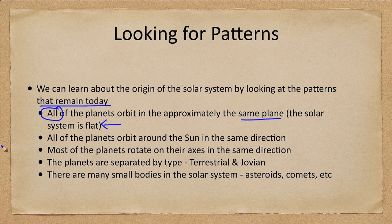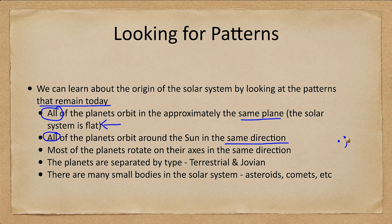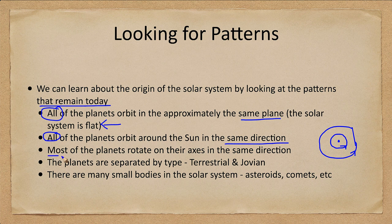All of the planets orbit around the Sun in the same direction. If you're looking down from above with the Sun, all of the planets go around the same direction counterclockwise. We don't have any that go clockwise. Most of the planets rotate on their axes in that same direction.